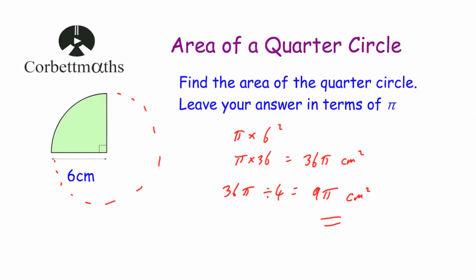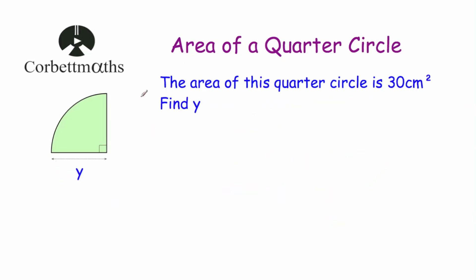Let's have a look at our last question. The last question says the area of this quarter circle is 30 centimetres squared, and we've been asked to find y, which is the radius of the whole circle. The area of this quarter circle is 30 centimetres squared, so if we times it by four, we find the area of the whole circle: 30 multiplied by four equals 120 centimetres squared.